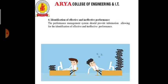The next characteristic is identification of effective and ineffective performance. The performance management system should provide information allowing for the identification of effective and ineffective performance. The system should allow for distinguishing between effective and ineffective behaviors and results, thereby also allowing for the identification of employees displaying various levels of performance effectiveness.